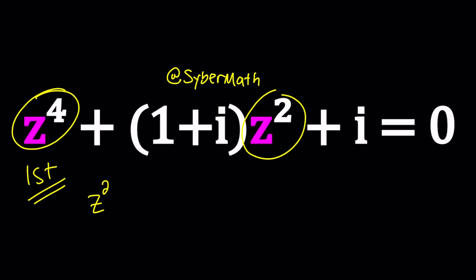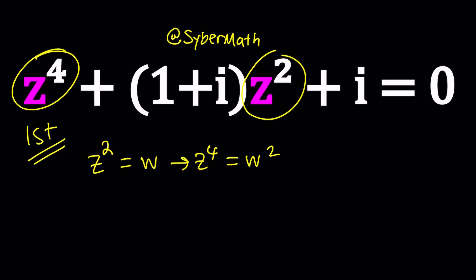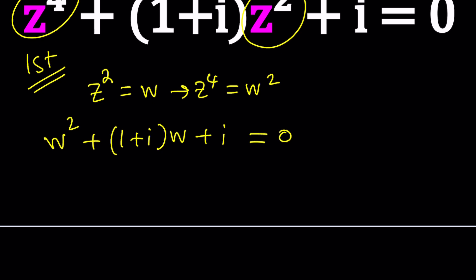In other words, if you replace z squared with w, then you get z to the fourth equals w squared if you square both sides. So this becomes w squared plus one plus i times w plus i equals zero. And now this is quadratic in w, which is good because we have a quadratic formula. We can use it to solve it.